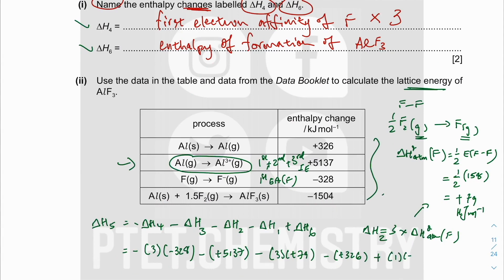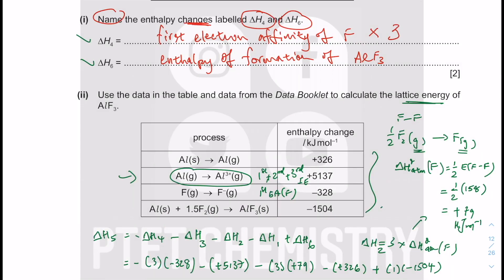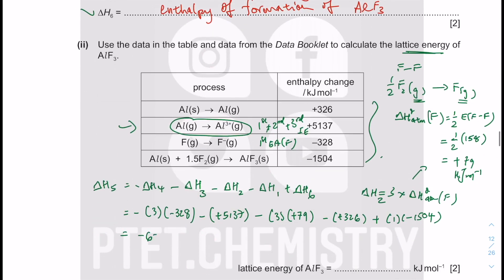Substituting into the equation: ΔH5 = −3×(−328) − 5137 − 3×(79) − 326 + (−1504). Calculating this gives −6220 kJ/mol. Double-checking the calculation confirms the same value: −6220 kJ/mol. The lattice energy is expected to be negative based on the Cambridge International definition, where lattice energy refers to forming the ionic solid from gaseous ions.